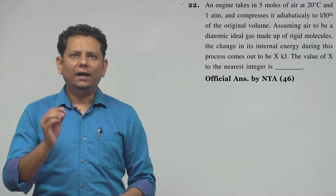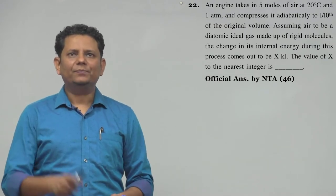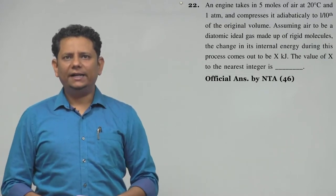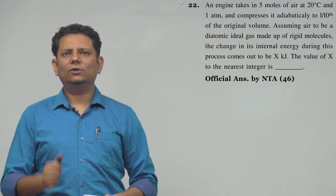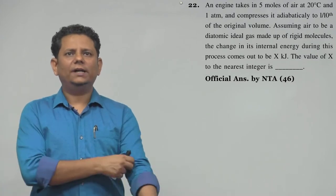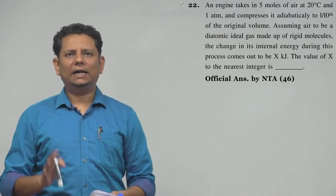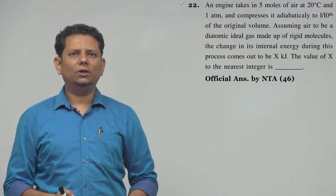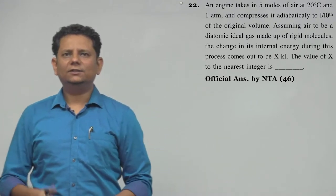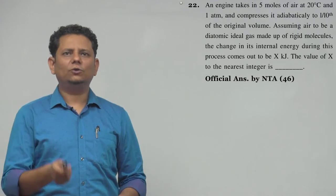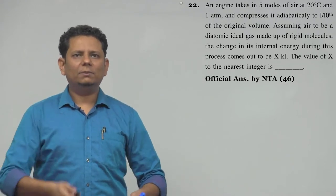Next question: An engine takes in 5 moles of air at 20 degree centigrade and 1 atm, and compresses it adiabatically to 1/10th of the original volume. Assuming air to be a diatomic ideal gas made up of rigid molecules, the change in internal energy during this entire process comes out to be X kilojoule.